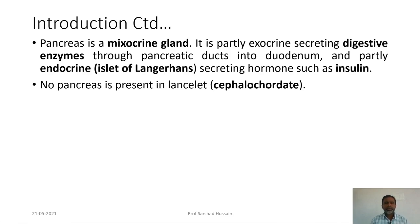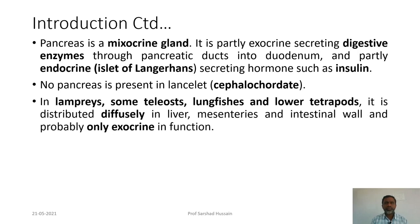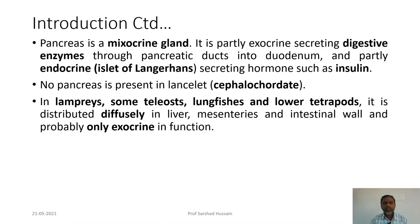In cephalochordates (lancelets), no pancreas is present. In lampreys, bony fishes, lungfishes, and tetrapods, it is distributed diffusely in the liver, mesenteries, or intestinal wall and probably has only exocrine functions. It is not present as a separate entity as seen in humans, and in these cases it likely has no endocrine nature — only exocrine function.